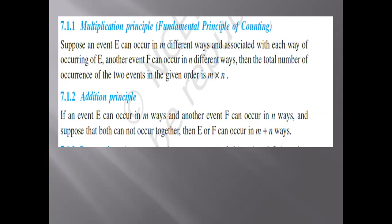For multiplication, both events must occur together — only then can we find the total number of different ways, which is m times n, whereas for addition it is m plus n.